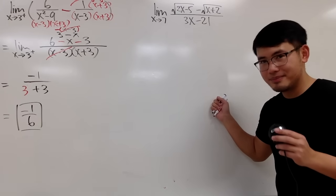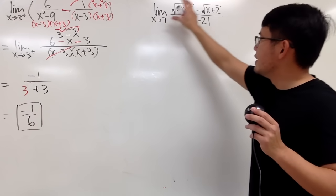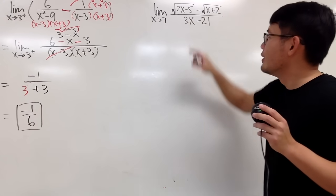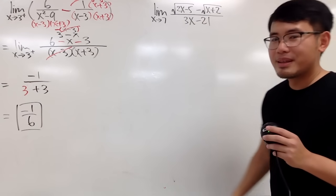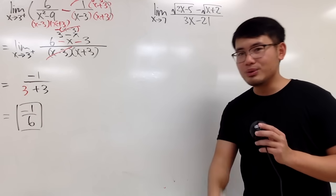Now, let's look at this one. When x is approaching 7, if you put 7 into all the x, let me just tell you, if you work this out, you get 0 over 0. Once again, we will have to do more work to fix this. And to do so, notice that we have square root. So the good strategy to use is to use the conjugate.